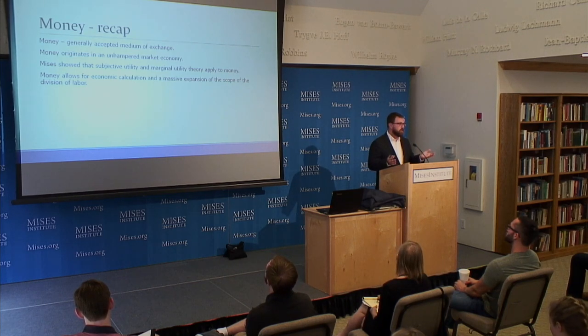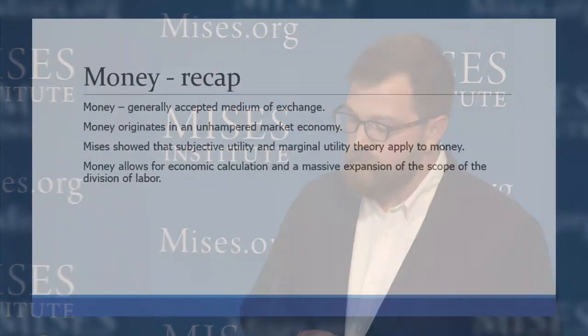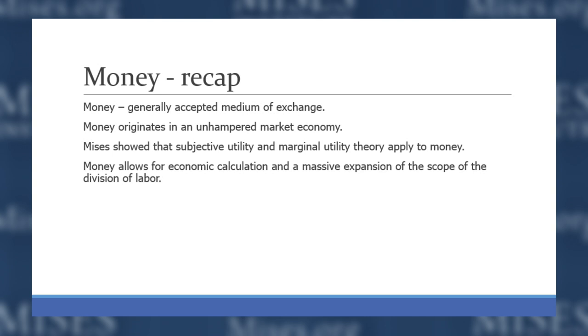We could say the same thing about banking. But banking doesn't necessarily solve a fundamental economic problem — we can imagine an economy where people just use the money in their pockets without storing it in a bank. So there is a little difference in that banking isn't an outgrowth of the unhampered market economy in the same way that money is. But we can definitely see how banking could naturally occur; there is a certain logic to how it would arise on the market. Mises also showed that subjective utility and marginal utility apply to money, which is one of his great insights.